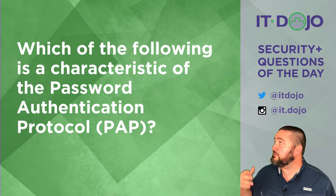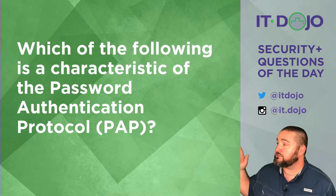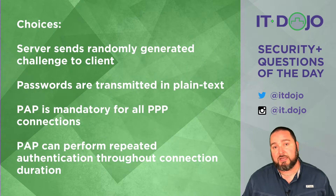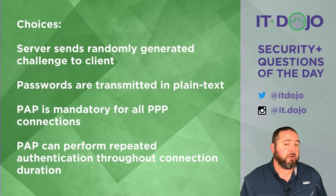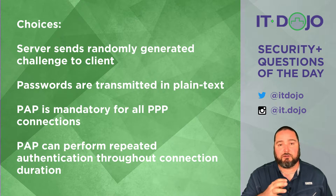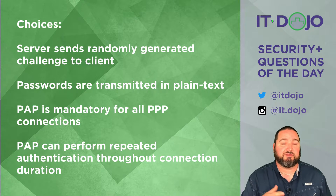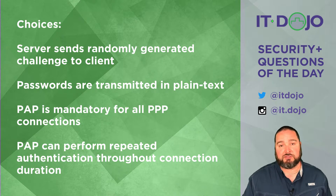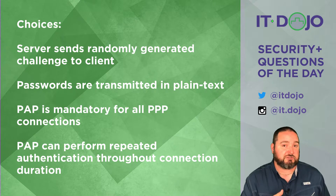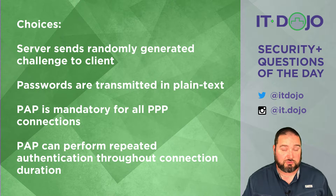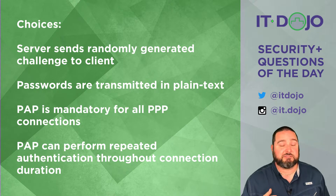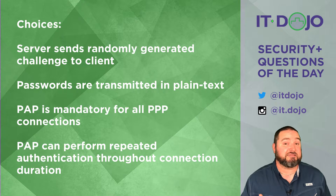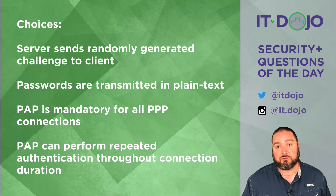Question number two: which of the following are characteristics of the Password Authentication Protocol, or PAP? Click pause if you need to read the options, then click play and we'll break it all down. Certification books typically break authentication down into PAP, CHAP, MS-CHAPv2, and sometimes EAP. The first option says PAP generates a random string and uses that as a challenge during the authentication process — that is not true. That's actually what the Challenge Authentication Protocol does; PAP does not do that.